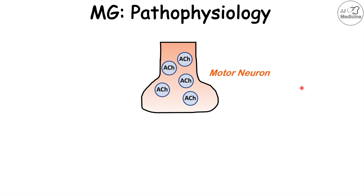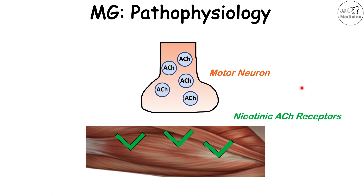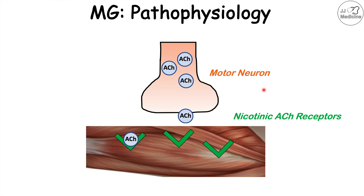If a patient wants to contract one of their muscles, they have motor neurons that contain acetylcholine neurotransmitter — specifically, motor neurons contain vesicles of acetylcholine. When a patient wants to contract a muscle, acetylcholine is released from the motor neuron and attaches to nicotinic acetylcholine receptors on the target muscle.